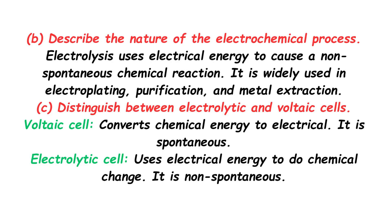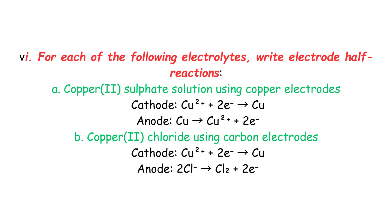Distinguish between electrolytic and voltaic cells. A voltaic cell converts chemical energy to electrical energy — it is spontaneous. An electrolytic cell uses electrical energy to cause a chemical change — it is non-spontaneous.